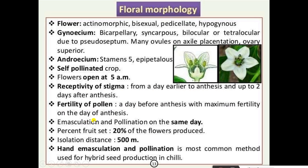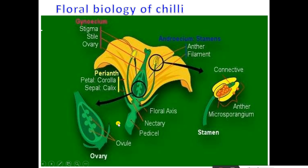Fertility of pollen: a day before anthesis with maximum fertility on the day of anthesis. Emasculation and pollination on the same day. Percent fruit set is 20 percent — meaning 20 percent of the flowers produce fruit. Isolation distance is 500 meters for seed production. Hand emasculation and pollination is the most common method used for hybrid seed production in chili crop.